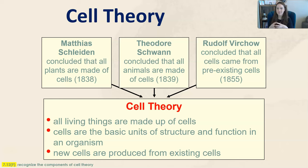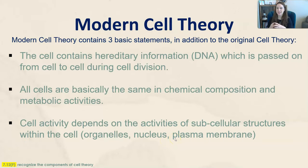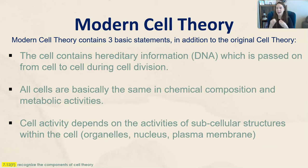Cells are the basic units of structure and function in an organism, and new cells are produced from existing cells. The modern cell theory tells us that the cell contains hereditary information — meaning DNA, your genetic material — and that's passed on from cell to cell during cell division. All cells are basically the same in chemical composition and metabolic activities. Every cell in my body has my DNA, and every cell in your body has your DNA.